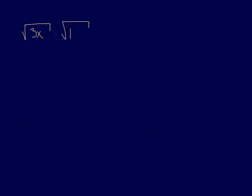Let's take a look at a bunch of examples. Let's simplify the square root of 3x times the square root of 11y. When multiplying radicals, we can multiply through: 3 times 11 is 33, and we have x times y. After multiplying, check for any perfect square factors. Since 33 factors as 3 and 11 — neither of which are perfect squares — and x and y are each to the first power, the final answer is the square root of 33xy.